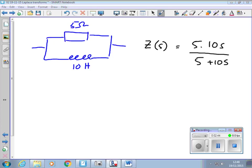And then we might try and simplify that. We can multiply the 5 by the 10 to get 50S over 5 plus 10S. So we might do something like that.